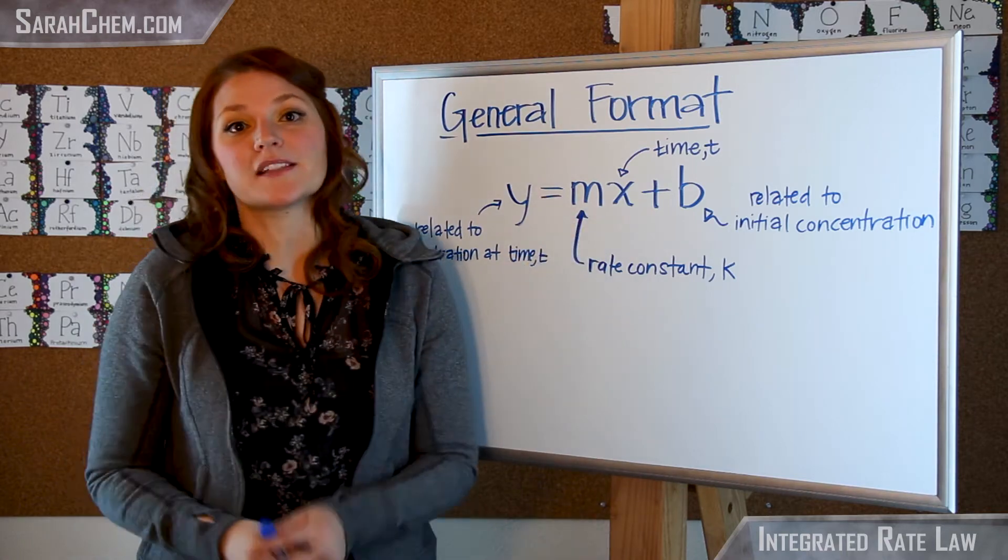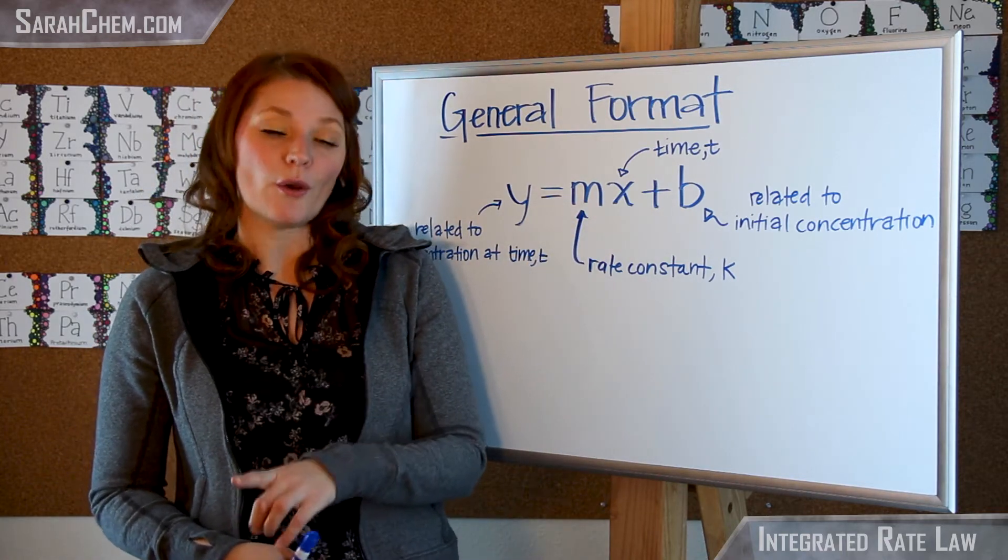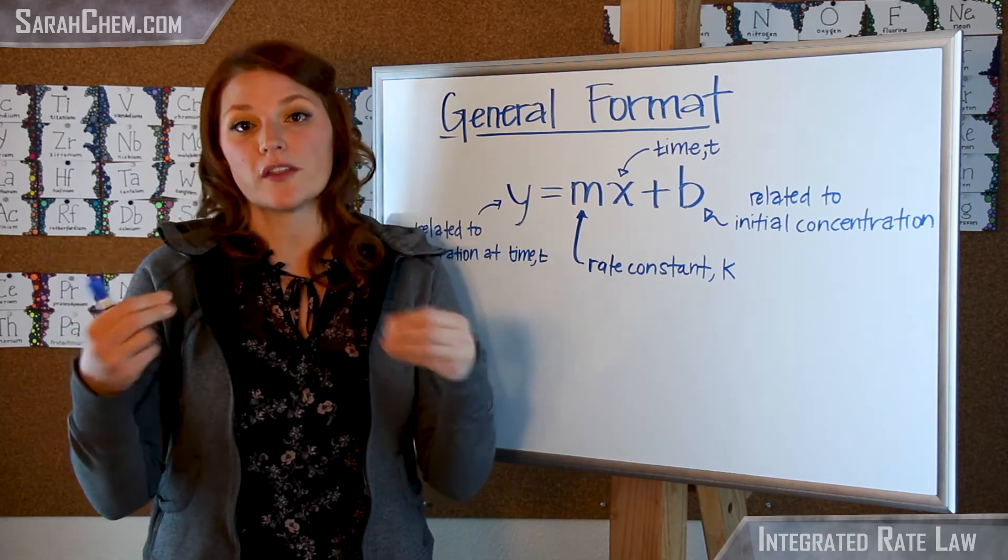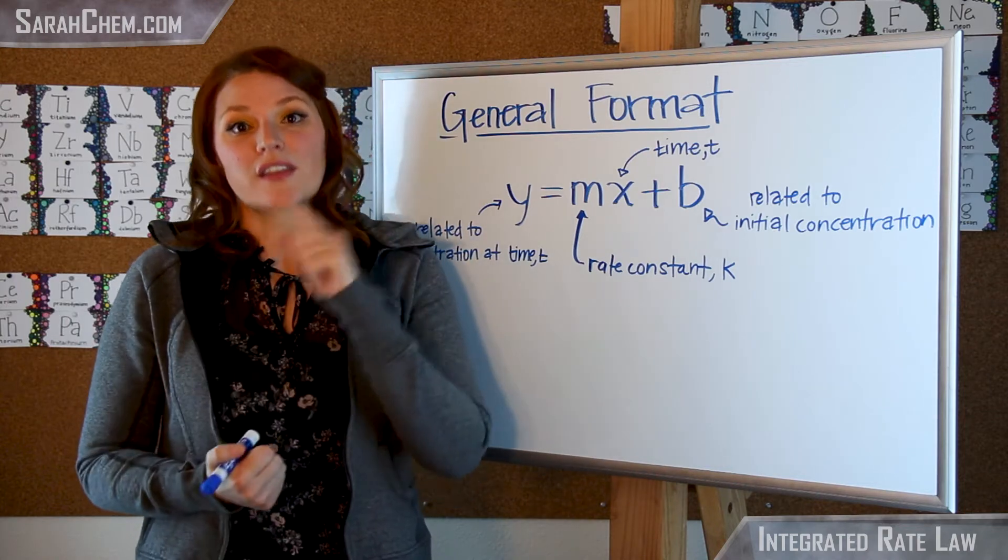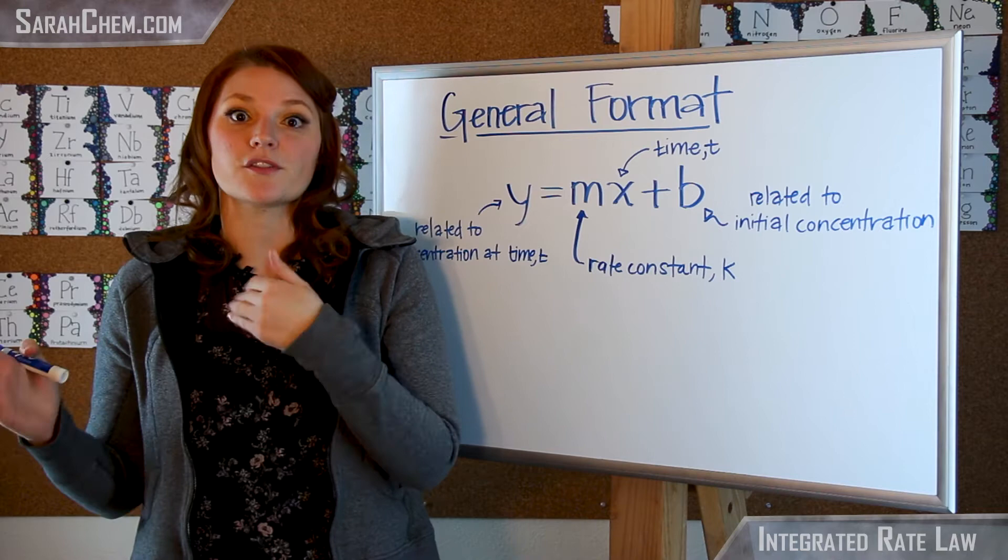Now the slope M is going to be equal to the rate constant K. That's sometimes very useful to know, because what they'll do is they'll show you what the overall line equation is for the integrated rate law. And then you'd need to know that the K value, the rate constant, was equal to the slope, and then you can solve problems further.